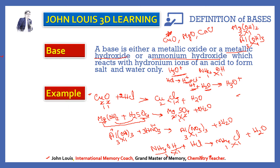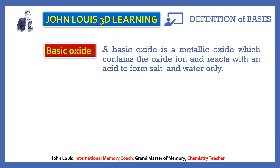When a metal oxide or metal hydroxide reacts with an acid, we get salt and water only. If any other product is formed, then the metal oxide or metal hydroxide cannot be a base. A basic oxide is a metallic oxide which contains the oxide ion and reacts with acid to form salt and water only. Examples are copper(II) oxide, magnesium oxide, and calcium oxide — all are bases because they react with acid to form only salt and water.